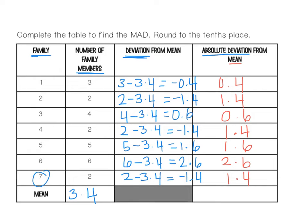When you add all of these up you should get 9.4, divided by 7, and that's going to give us 1.3 for our MAD value. So 1.3 is the mean absolute deviation.